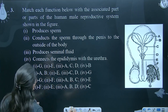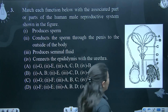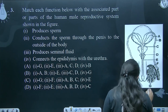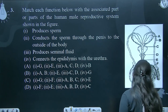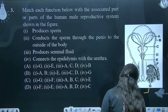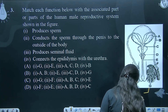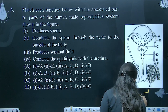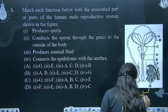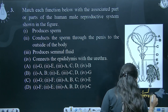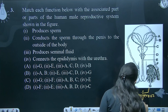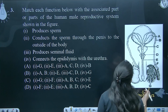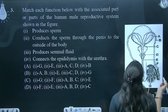Labeling se match karna hai ki kaun kya kar raha hai. So basically thoda thoda label kar lete hain. Major major parts. This is seminiferous tubule. Pura label karna possible nahi hoga due to space issues.